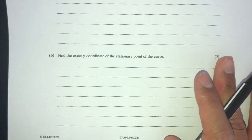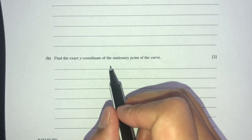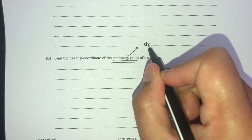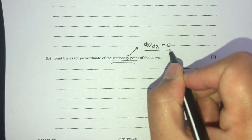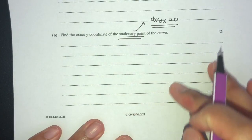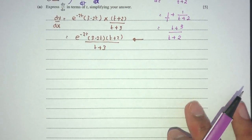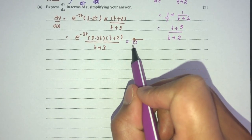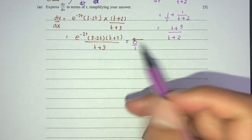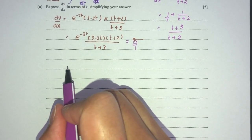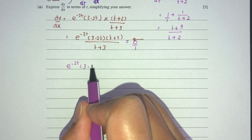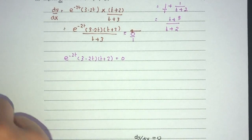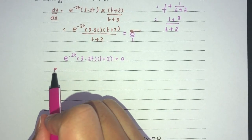For part b, we find the exact y-coordinate of the stationary point. At a stationary point, dy/dx = 0. Setting our expression equal to 0 and cross-multiplying: e^(−2t)(3 − 2t)(t + 2) = 0. This is already factorised, giving three factors: e^(−2t) = 0, or (3 − 2t) = 0, or (t + 2) = 0.